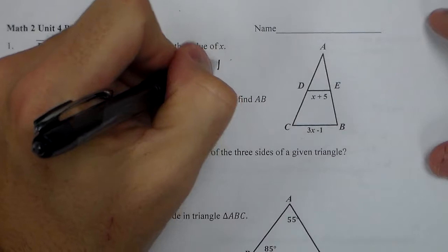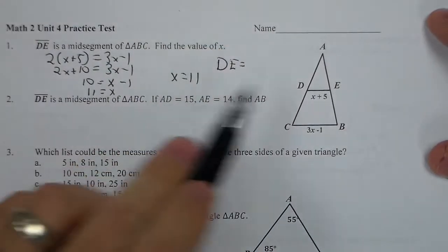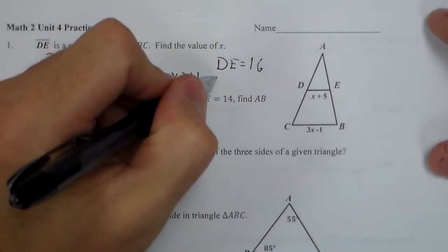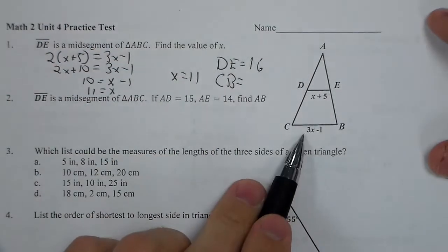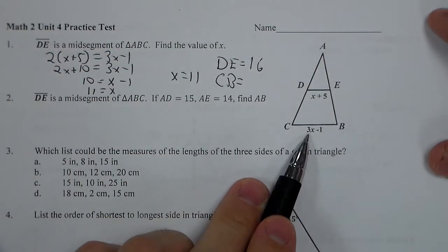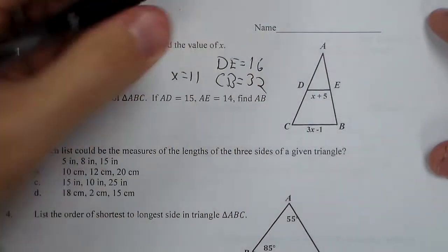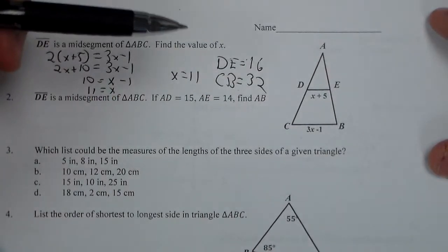I should check to make sure it works. DE, 11 plus 5 is 16. CB, plug that in, I get 3 times 11 is 33, minus 1 is 32. And it works. DE is half CB.